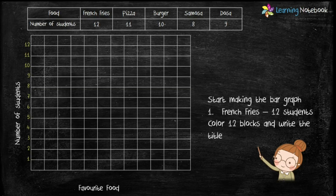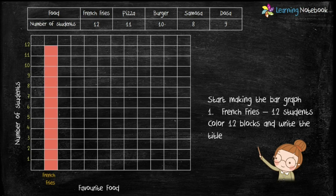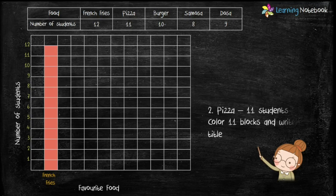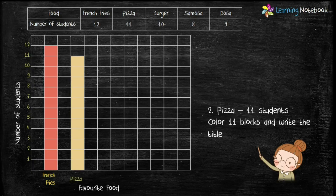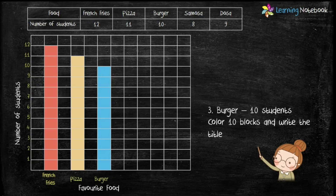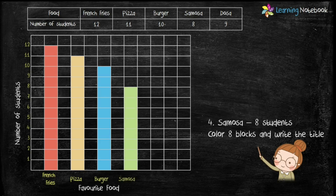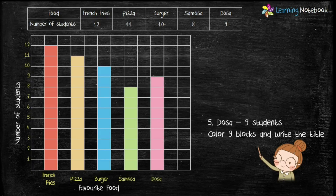Now let's start making the bar graph. First, represent students who like french fries — that is 12 students — so let's color 12 blocks and write the title 'French Fries.' Now represent students who like pizza — there are 11 — so color 11 blocks and write 'Pizza.' For burger, we have 10 students, so color 10 blocks and write 'Burger.' In the same way, make bars for samosa and dosa. This is how we represent data using bar graphs.